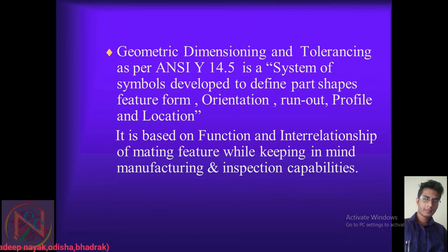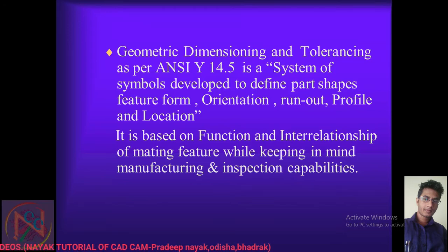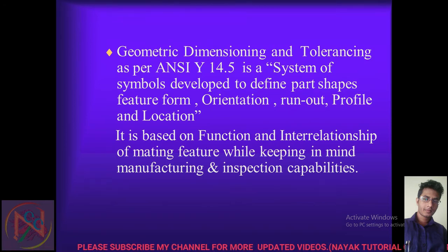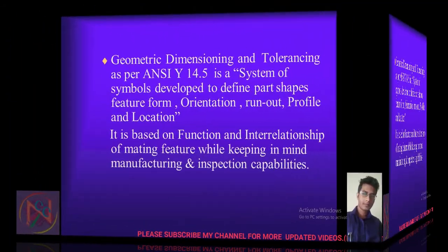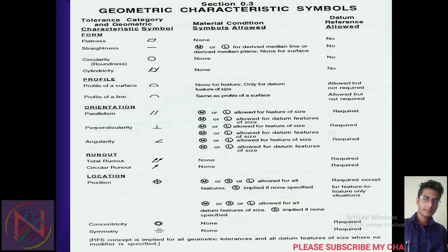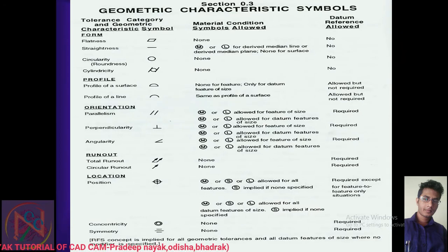GD&T is classified into five types: part shape, feature form, orientation, runout, profile, and locations. It is based on the functions and relationships of mating features, keeping in mind manufacturing and inspection capabilities. Geometric characteristic symbols are classified into five categories: forms, profiles, orientations, runout, and locations.